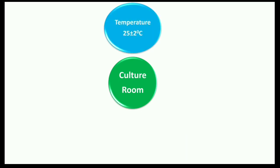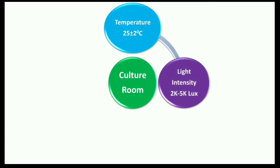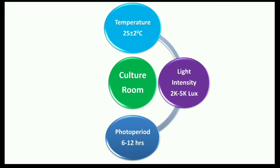The next room is the culture room, the most important room in a tissue culture laboratory. This is the room where we provide all controlled environmental conditions for proper growth and development of plants. Temperature is maintained at 25 ± 2 degrees Celsius. Light intensity ranges from 2000 to 5000 lux. There is a difference between light intensity and photoperiod — light intensity is defined as the number of photons striking per unit area per unit time.